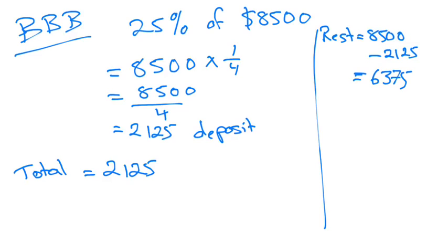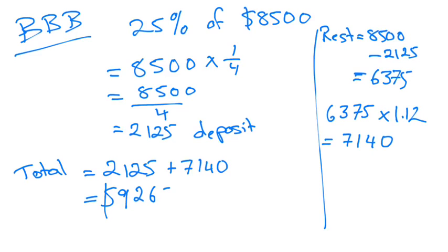But now she's going to be paying the 12% interest on that amount. So we need to find out how much that is. So $6,375 times 1.12 because there's our 12% interest on top that we're going to pay. And that will give you $7,140. So in total it would be the deposit plus the $7,140 which gives a total cost of $9,265.